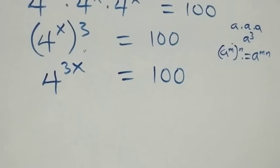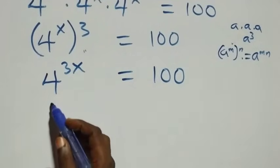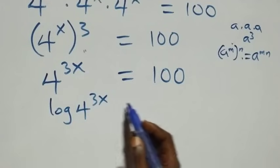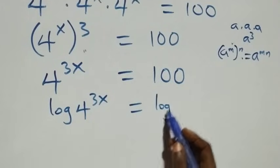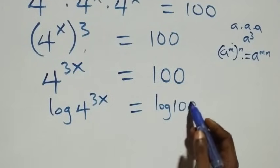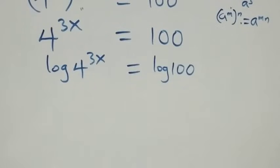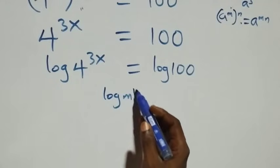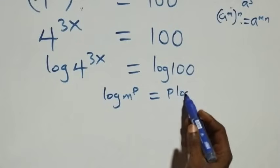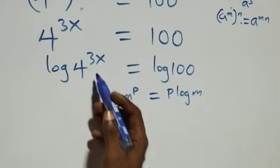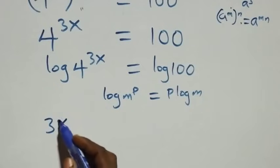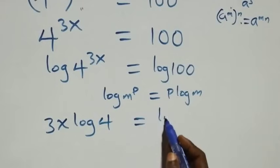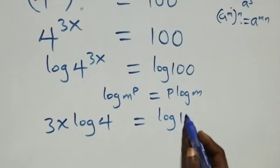The next step: we take the log on both sides. We have log of 4 raised to power 3x equals to log of 100. We then apply the log power rule — when we have log of m raised to power p, this is the same as p times log m. So the power 3x comes down, giving us 3x times log 4 equals to log 100.